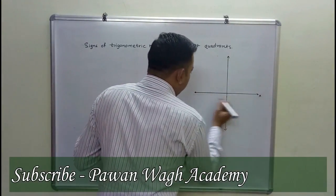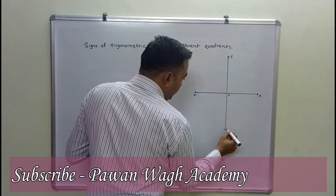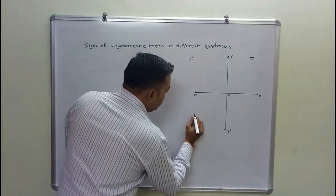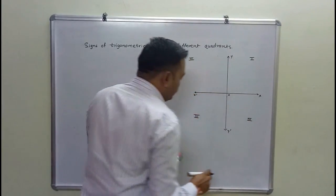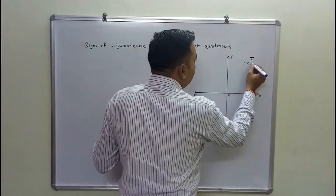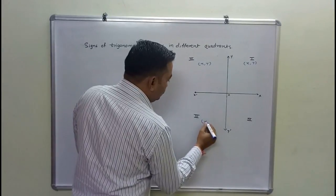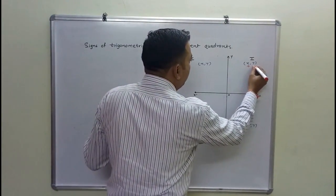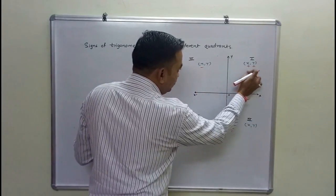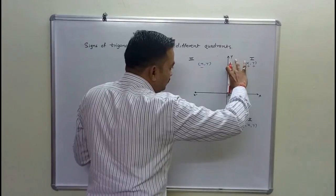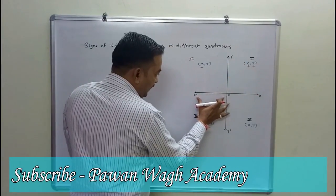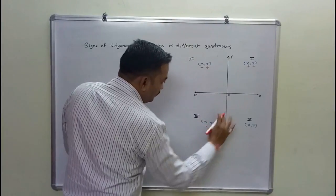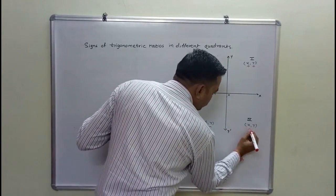First of all, we will draw the x-axis, y-axis, and y-dash. This is the first quadrant, this is the second quadrant, this is the third quadrant, and this is the fourth quadrant. In the first quadrant, x is positive and y is positive. In the second quadrant, x is negative and y is positive. In the third quadrant, x is negative and y is negative. In the fourth quadrant, x is positive and y is negative.